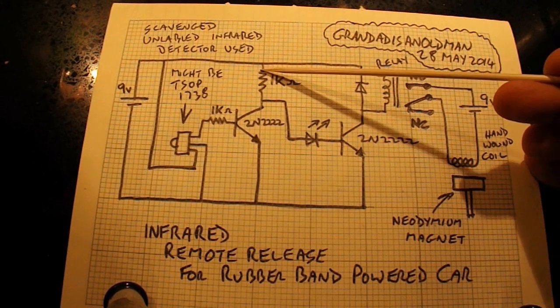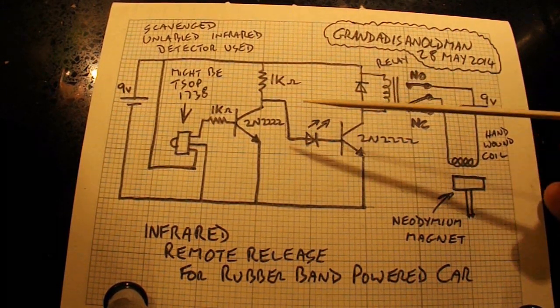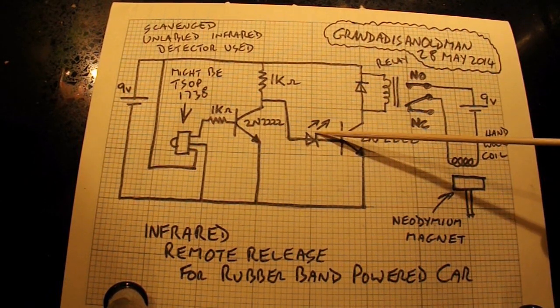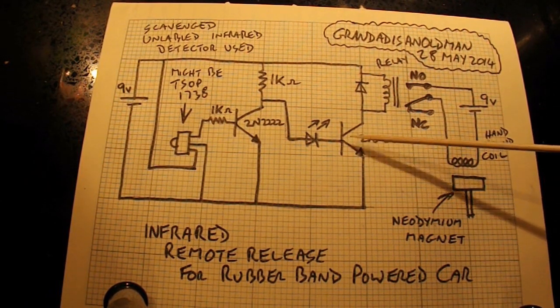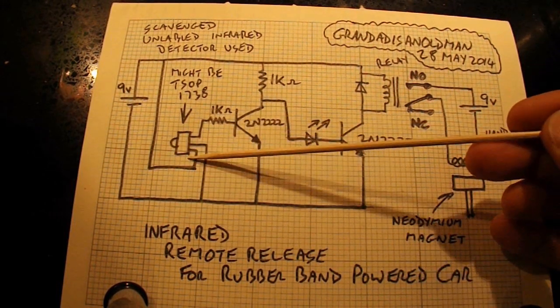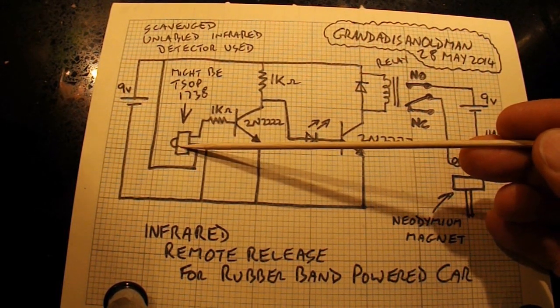There's another 1K resistor there. I didn't mention that, did I? But there's very little to this. Two transistors, two resistors, one LED, this harvested detector.